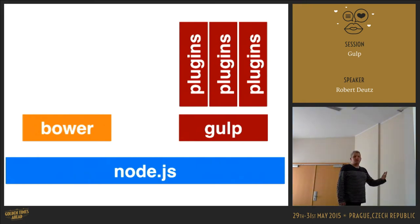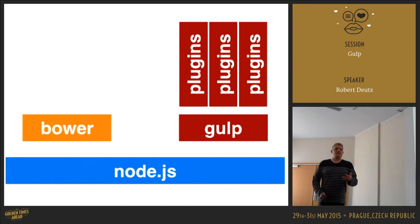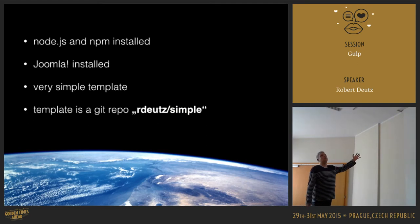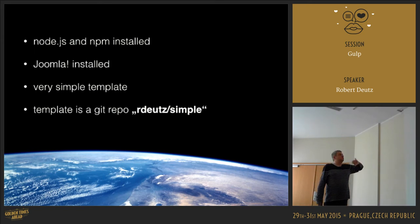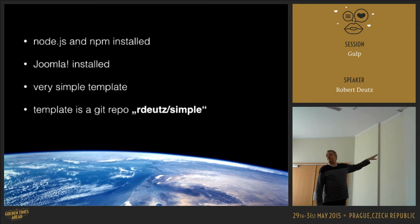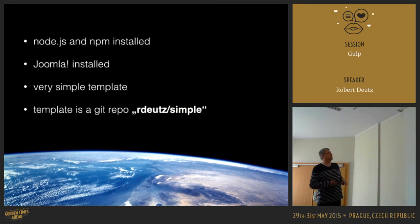So what we are doing now — I will not do the boring parts. All the groundwork has been done: we have Node.js and npm installed, I have installed Joomla. I have a very simple template — it's a Bootstrap template. I just put some Joomla text in it. Not really something complicated.